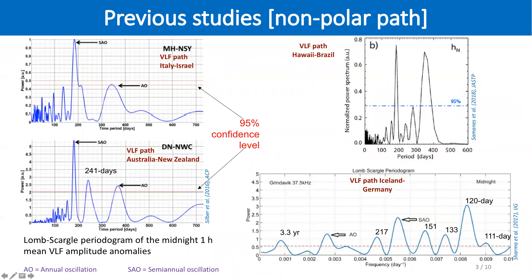Silbert et al. in 2016 applied the Lomb-Scargle periodogram to recorded VLF signals that had propagated in low and mid-latitude regions, to determine the dominant oscillations. They showed that the most dominant are the annual and the semi-annual. Samones et al. 2018 and Charmat et al. 2017 also found the same, but for low latitudes and quasi-polar paths.